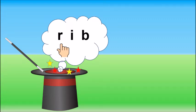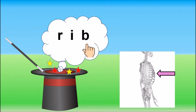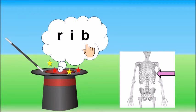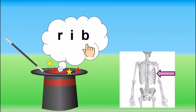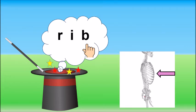R I B, rib. Children, this is a rib. Rib is a set of bones which protects your heart and lungs. Rib.